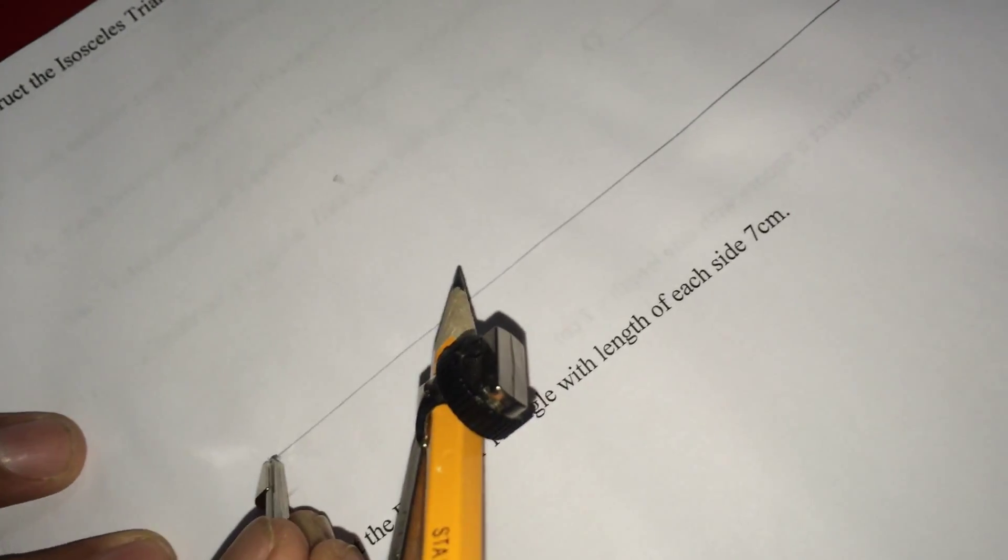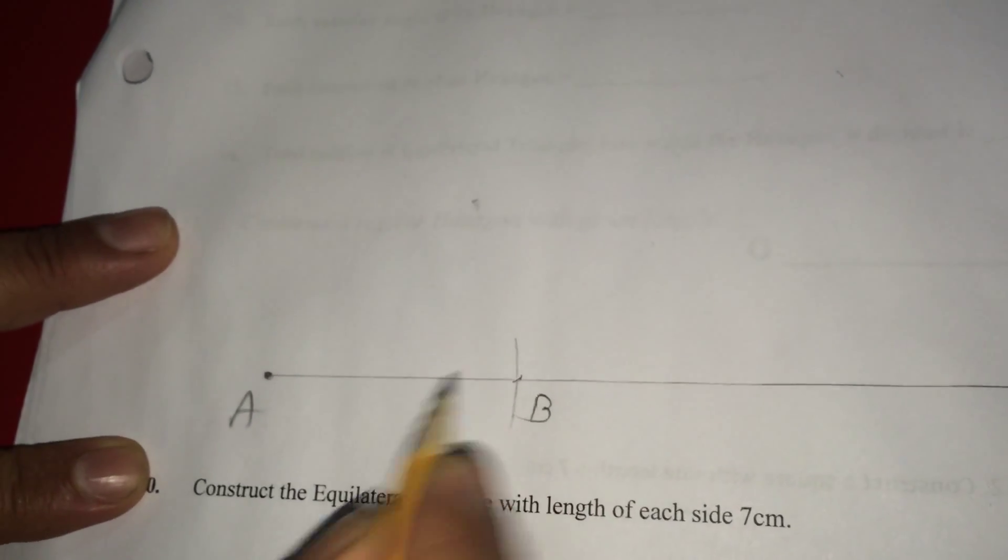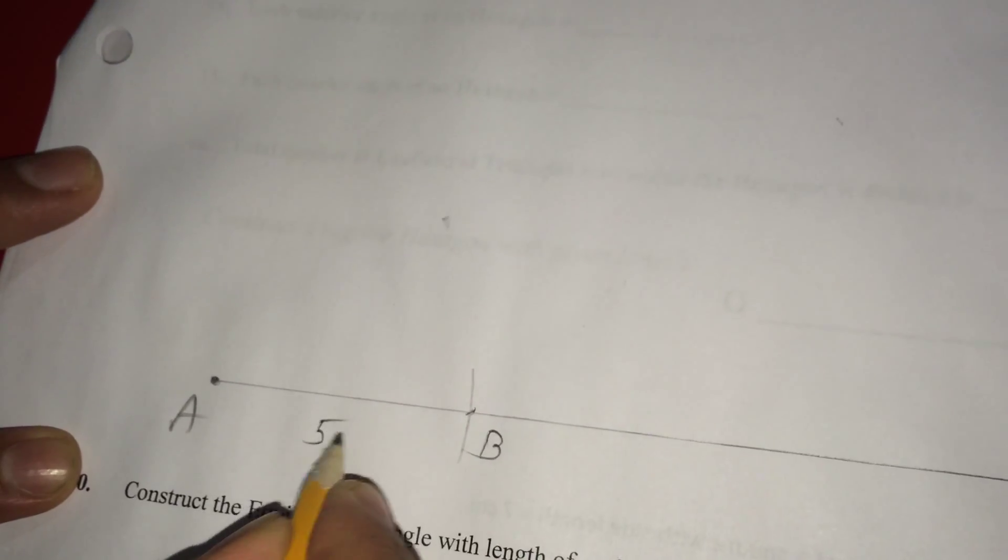This is 5 cm. From taking A as center, you have to cut on this line. Then, if you call this point as B, now this AB is exactly 5 cm.